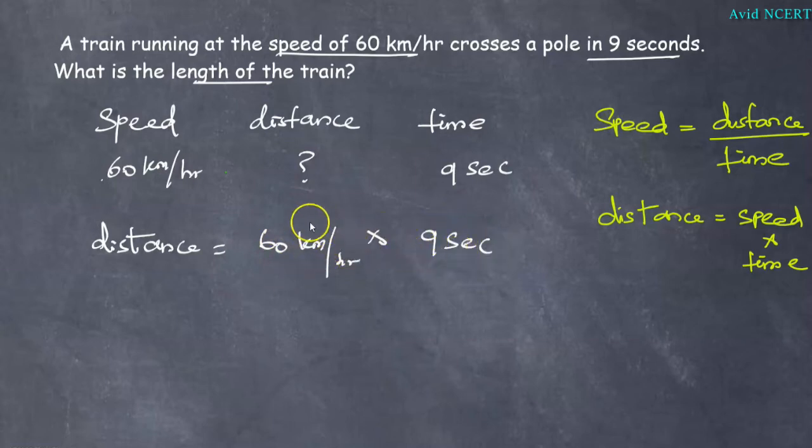Since this is in kilometers per hour and this is in seconds, we have to convert kilometers per hour into meters per second. The formula to convert kilometers per hour to meters per second is to multiply the value by 5 by 18.